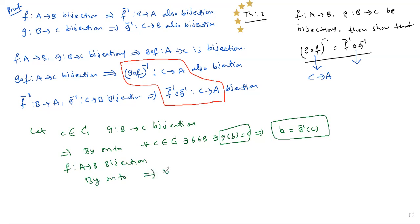F: A→B, by definition, for all B belongs to B, there exists A belongs to A such that F of A is equal to B. F of A equal to B. That implies F inverse of B is equal to A.